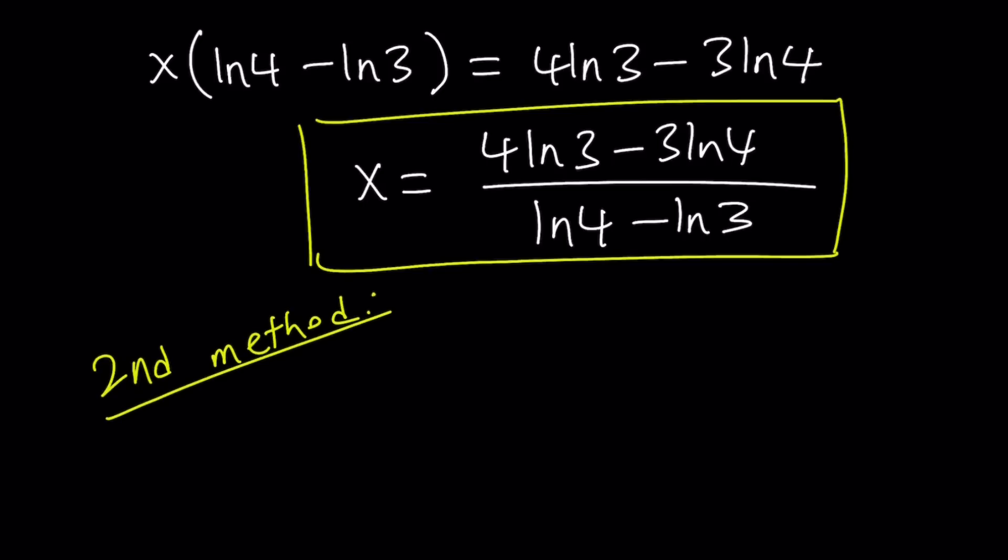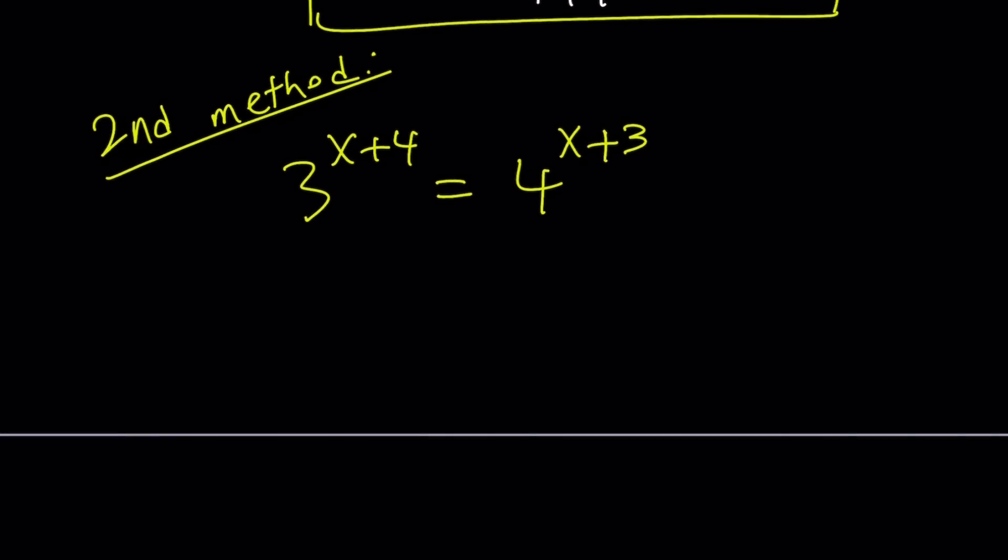For my second method, I'm going to do something different. We have 3 to the power x plus 4 equals 4 to the power x plus 3. For my second method, I don't want to use natural log, at least for now, or any other log. I want to put the terms that have x in them together. I'm able to do that nicely because the exponents are actually going to be eventually the same. Let's go ahead and write 3 to the power x plus 4 as 3 to the power x times 3 to the power 4 and the other one as 4 to the power x times 4 to the power 3.